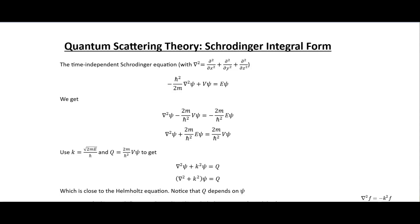In this video we're going to continue with quantum scattering theory. This video is mostly a preamble to the Born approximation method. The purpose is to get from the differential form of the Schrödinger equation into an integral form, which we'll then use in the next video to do the Born approximation method and the Born series.